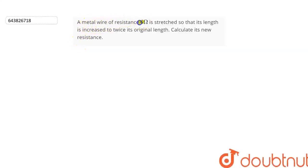A metal wire of resistance 6Ω is stretched so that its length is increased to twice its original length, and we have to calculate the resistance of the new wire. Let's start.